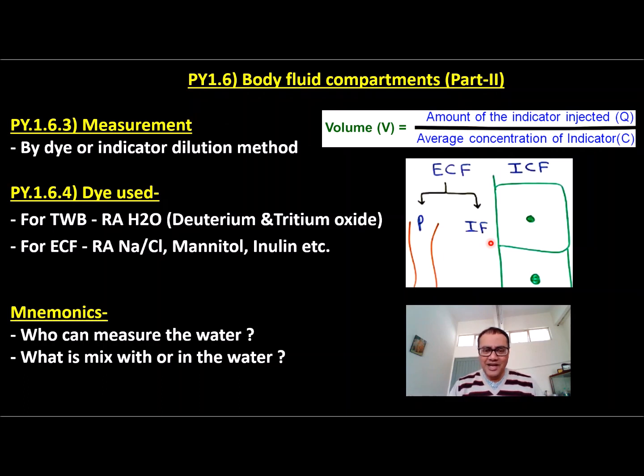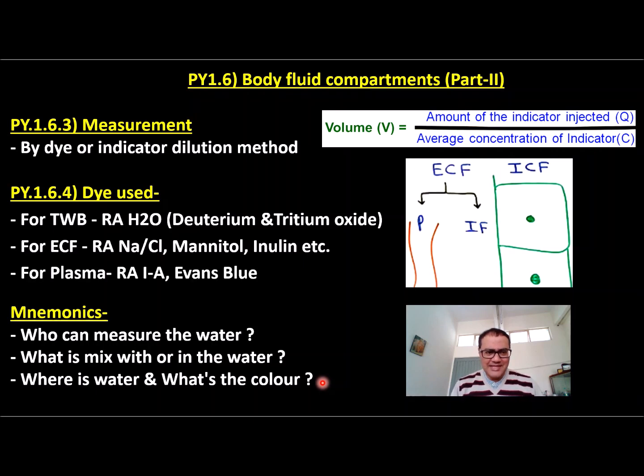And our third tricky question is: where is the water or what is the color of the water? So we can say water is everywhere, inside also, all around also. So from inside, I, iodine. All around, from A, albumin. So radioactive iodine and albumin can be used to measure plasma.